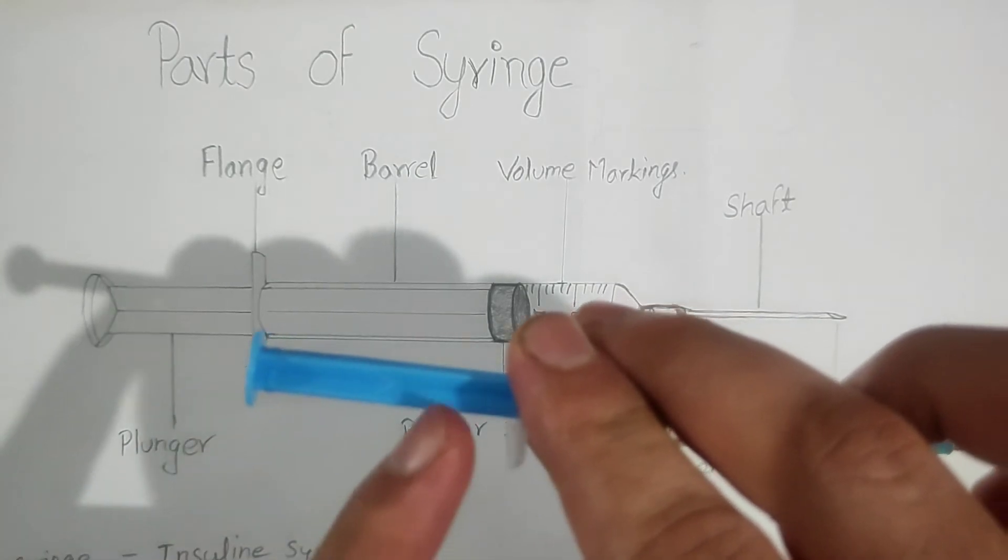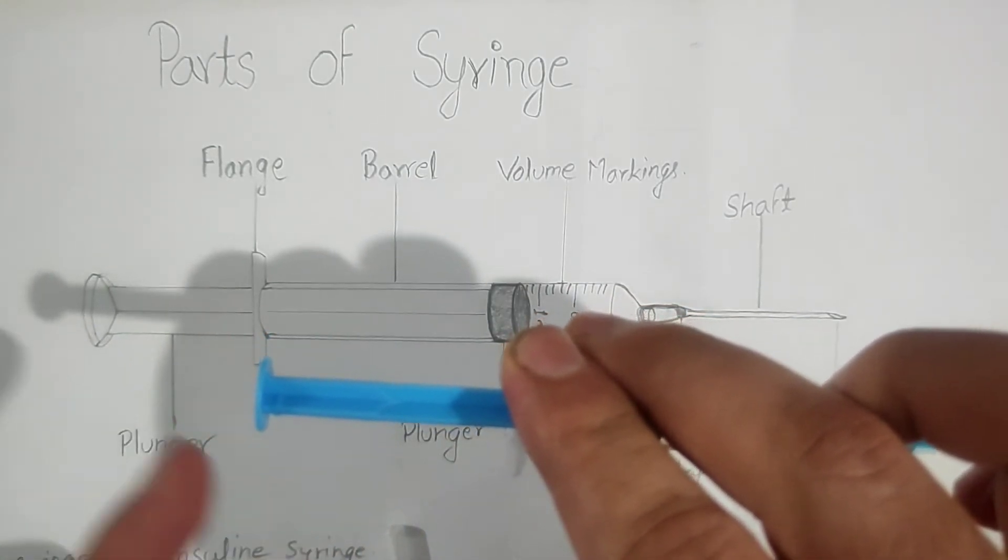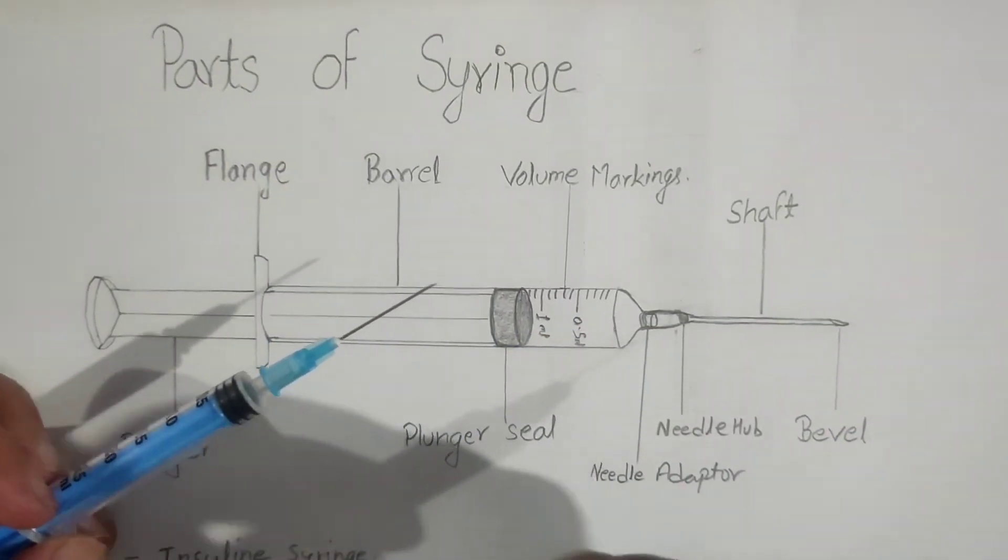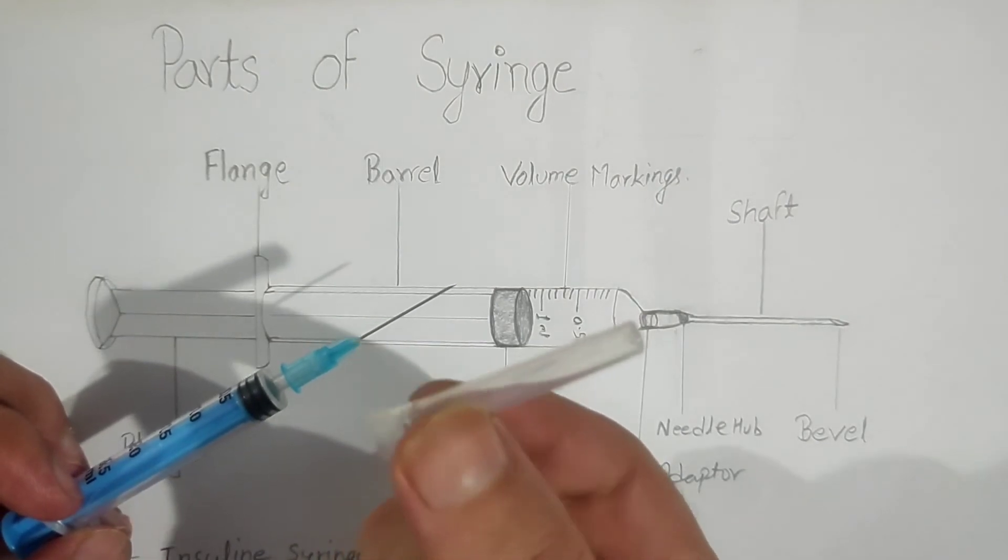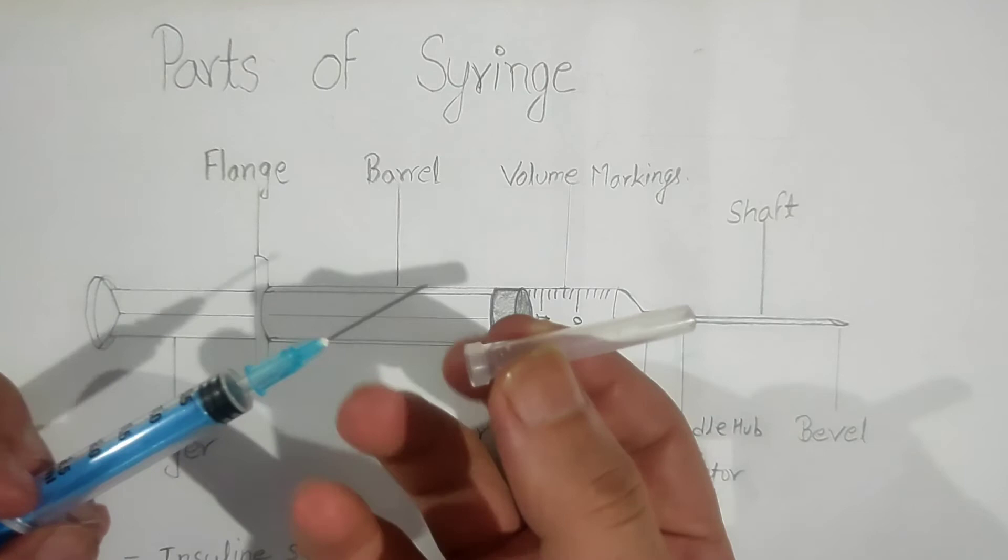This portion is also known as a flange, but it is attached with the plunger, that's why it is known as the plunger flange. And another part is the cap—needle cap or protecting cap—which is used